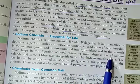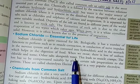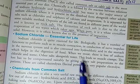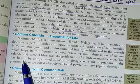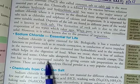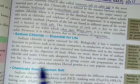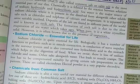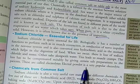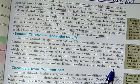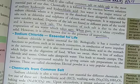When we sweat, there is loss of sodium chloride and other salts along with water. This leads to muscle cramps. The loss has to be compensated suitably by giving certain salt preparations to the patient — these are called electrolytes. Electral powder is a very popular electrolyte.